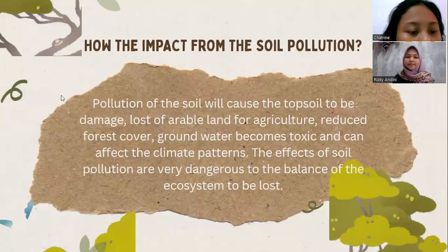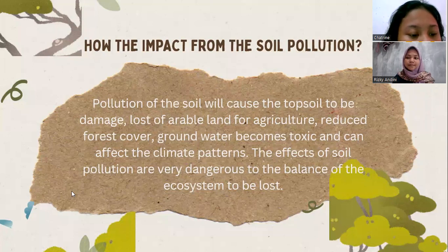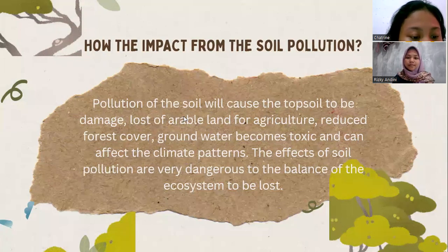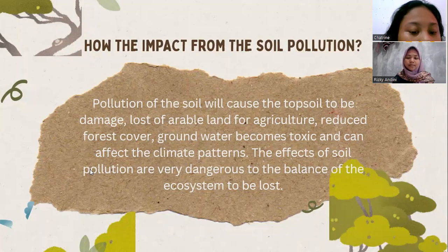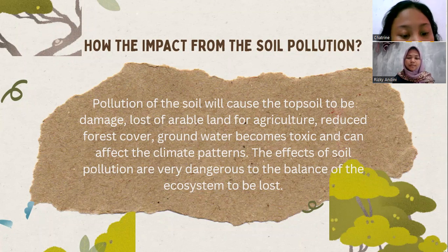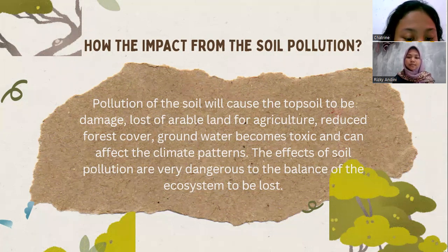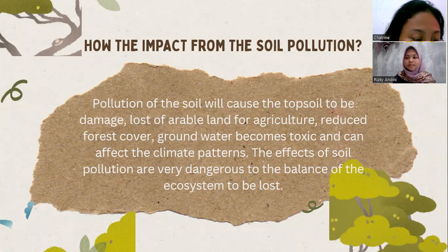What is the impact of soil pollution? The pollution of the soil will cause the topsoil to be damaged, loss of arable land for agriculture, reduced forest cover, groundwater becoming toxic, and can affect climate patterns. The effects of soil pollution are very dangerous and can cause the balance of the ecosystem to be lost.